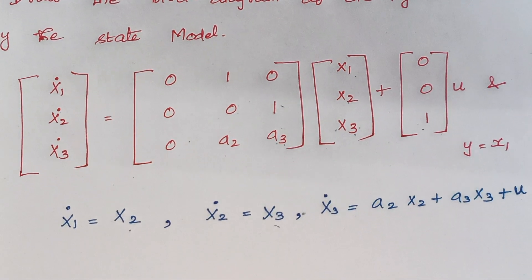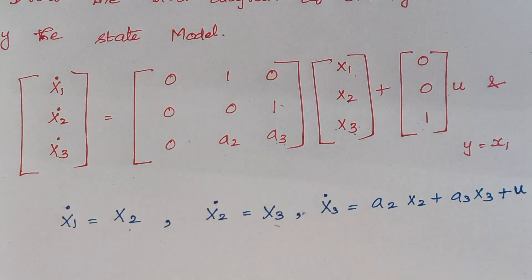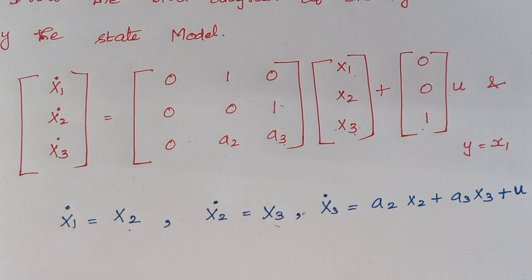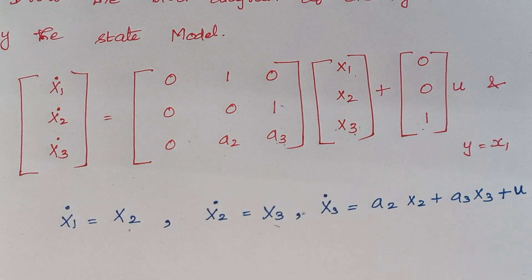We have framed the expressions from the given state model. Now we are going to draw the block diagram. As we all know, the basic block diagram consists of several elements: we will have a block, there will be a summer, and there will be a feedback path or feed-forward path.